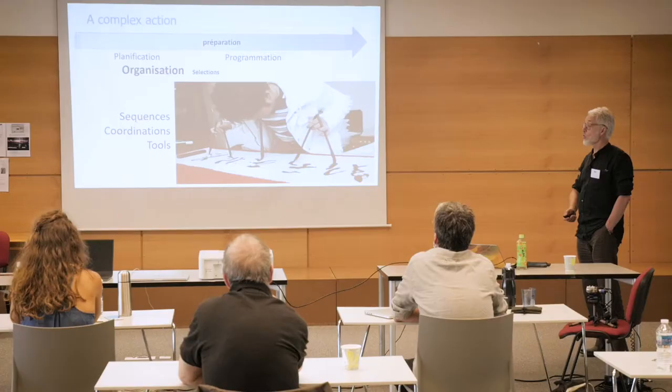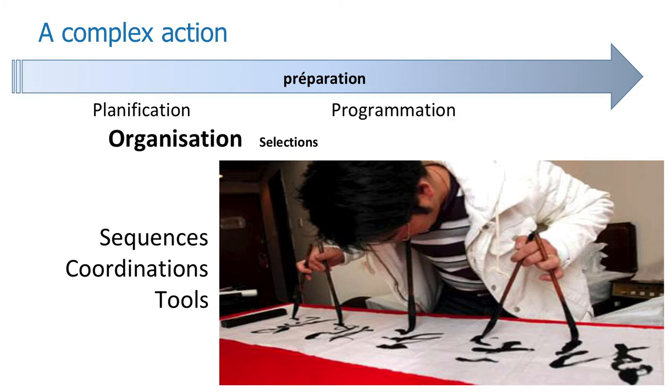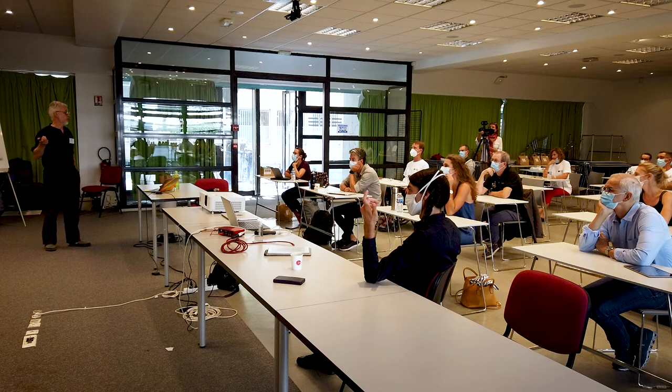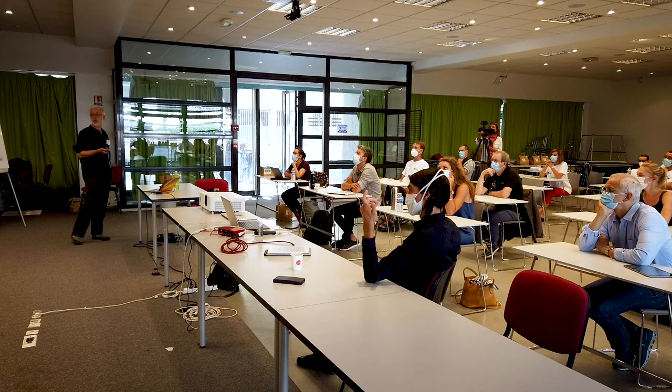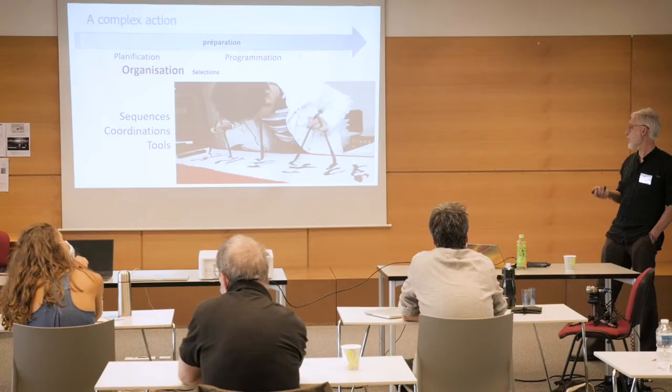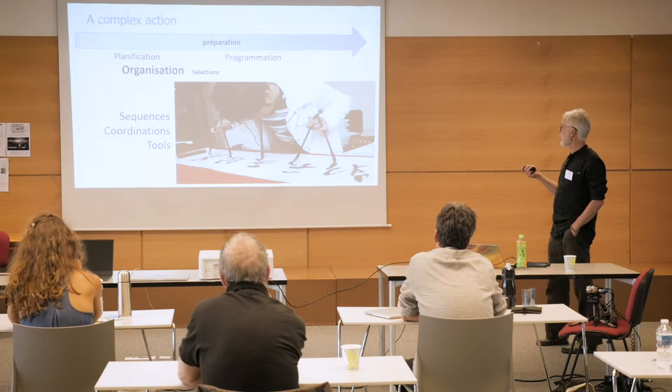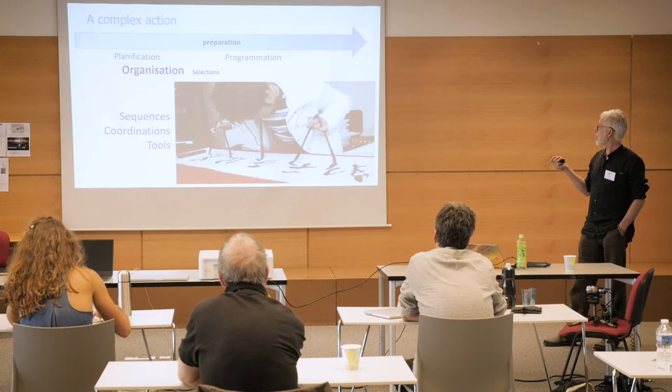Complex actions — such as extreme sports or musical skills — illustrate how humans coordinate many different muscles in sophisticated ways. They involve sequence learning, coordination, and tool use. Even a simple task like making toast, when decomposed, requires cutting, spreading, directing the hand, grasping, lifting, transporting objects — each aim decomposed further into muscle commands, giving rise to very complex organizational structures.